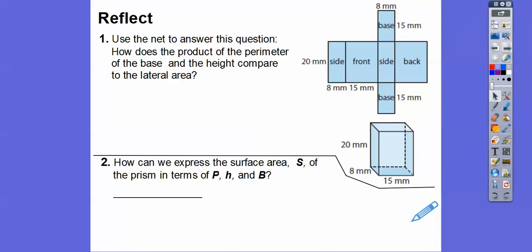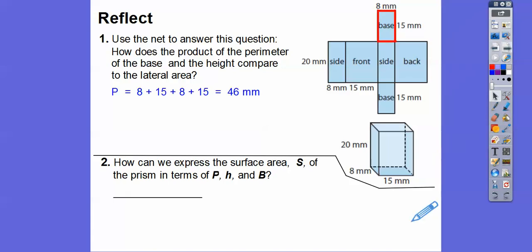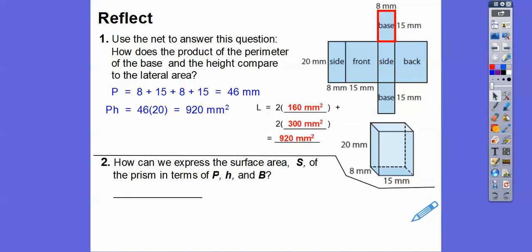Now there are other ways to find the answer. One way: use the net to compare. How does the product of the perimeter of the base and the height compare to the lateral area? The perimeter of the base is 8 plus 15 plus 8 plus 15, which gives us 46. Then we multiply 46 times 20 — 46 times 2 is 92, so 46 times 20 is 920. And we got 920 for the lateral area. So the lateral area can also be represented as the perimeter times the height.